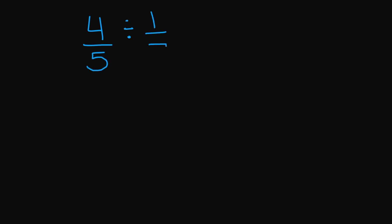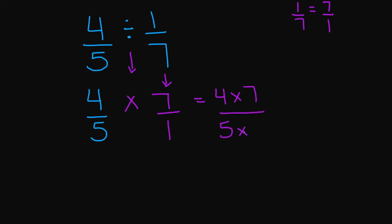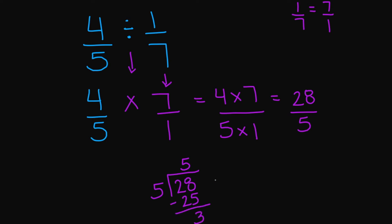Let's try four over five divided by one over seven. Four over five stays the same. Division is going to turn into multiplication. The reciprocal of one over seven is seven over one. Now multiply across: four times seven in the numerator, five times one in the denominator. Four times seven is 28, five times one is five. Since we have an improper fraction, we're going to turn this into a mixed number. Five on the outside, 28 on the inside. Five goes into 28 five times. Five times five is 25. 28 minus 25 equals three. So your final answer is 28 over five, or five and three fifths.